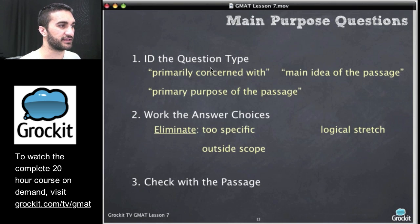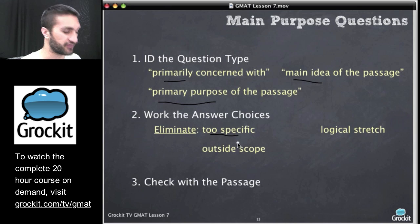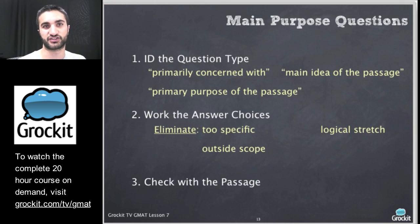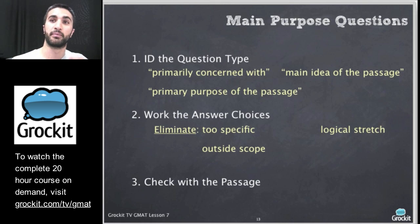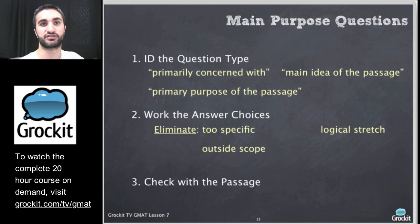Last week we looked at main idea and main purpose questions. We said to identify the question type, we're looking for language like 'primarily concerned with,' 'main idea,' or 'primary purpose.' We want to eliminate answer choices that are too specific, because if an answer choice is referencing just one very specific thing the passage pointed out, your mind thinks 'that was in there,' but that's not answering the question. We go back and forth between the passage, the question, and the answers to make sure the answer matches the actual question.